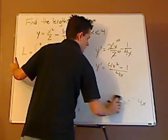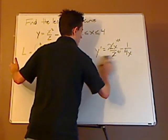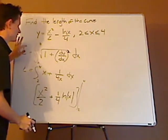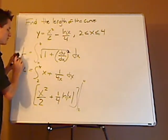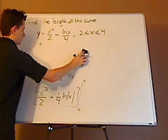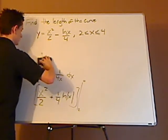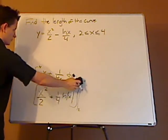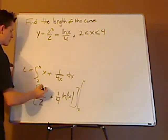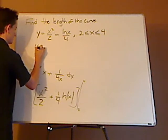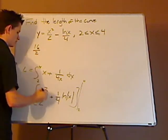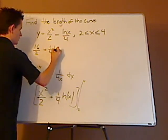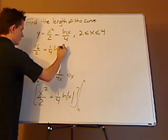So let me erase some of this. I'm going to erase this as well because we're not going to have any need for it. And let me just write this whole thing out. So first off, you plug in 4. So this is 4 squared, which is 16 over 2, plus 1 fourth natural log 4.